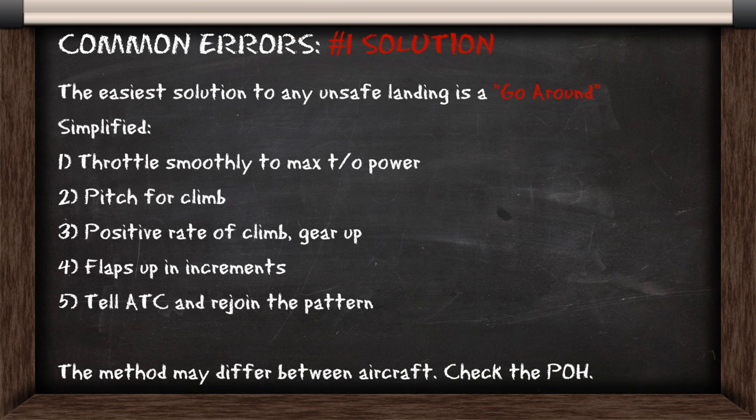The easiest solution to any unsafe landing is a go-around. To do this we increase the throttle smoothly to maximum takeoff power and we pitch for a climb. Once we have a positive rate of climb we bring the gear up, then maintain a positive rate of climb as we bring the flaps up in increments. We can then tell ATC and rejoin the traffic pattern.